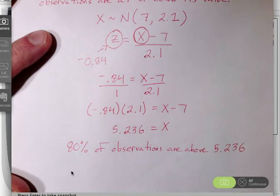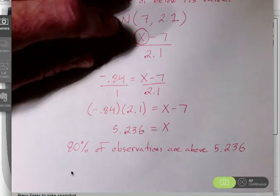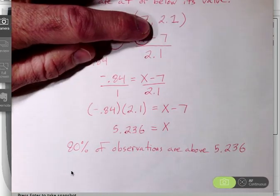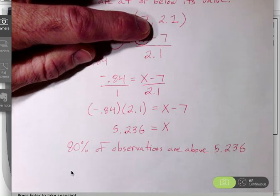So something to think about when you are working with a question where you are trying to work backwards and find an observation that corresponds to a particular percentage under the normal distribution.